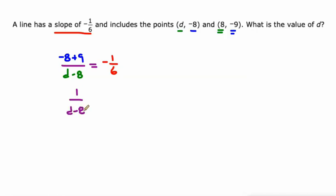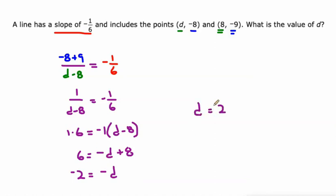Over D minus 8 equals negative 1 sixth. Again, we can use cross products. We'll do 1 times 6 equals D minus 8 times negative 1. 6 equals when we distribute over here we get negative D plus 8. And then, we'll subtract 8 from both sides. We get negative 2 equals negative D. That means D equals positive 2.